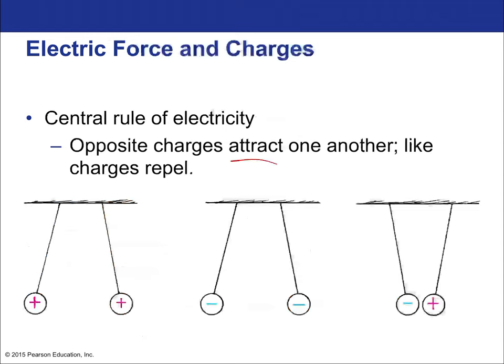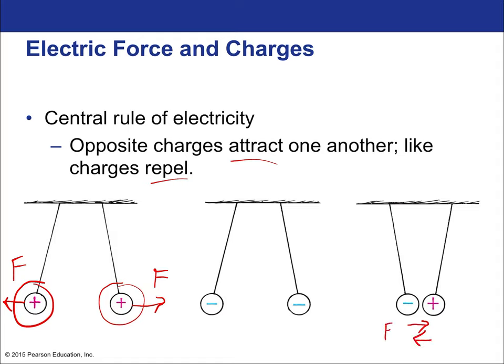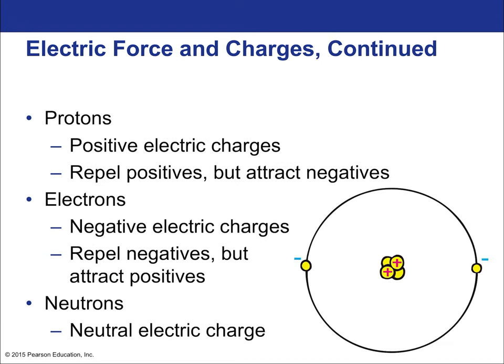The big overarching idea is this: opposite charges attract, like charges repel. If you have two positive charges, they will push each other away—a repulsive force. On the other hand, if you have opposite charges, a positive and a negative, they will experience an attractive force. That force is proportional to the product of the charges and the distance between them.